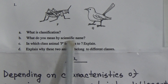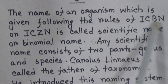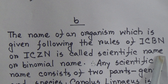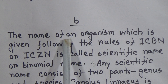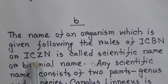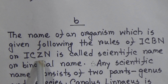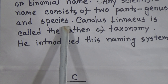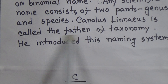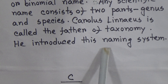Number B: what do you mean by scientific name? The name of an organism which is given following the rules of ICBN or ICZN is called a scientific name or binomial name. ICBN stands for International Code of Botanical Nomenclature — used for plants. ICZN stands for International Code of Zoological Nomenclature — used for naming animals. Any scientific name consists of two parts: genus and species. Carolus Linnaeus is called the father of taxonomy and he introduced this naming system.